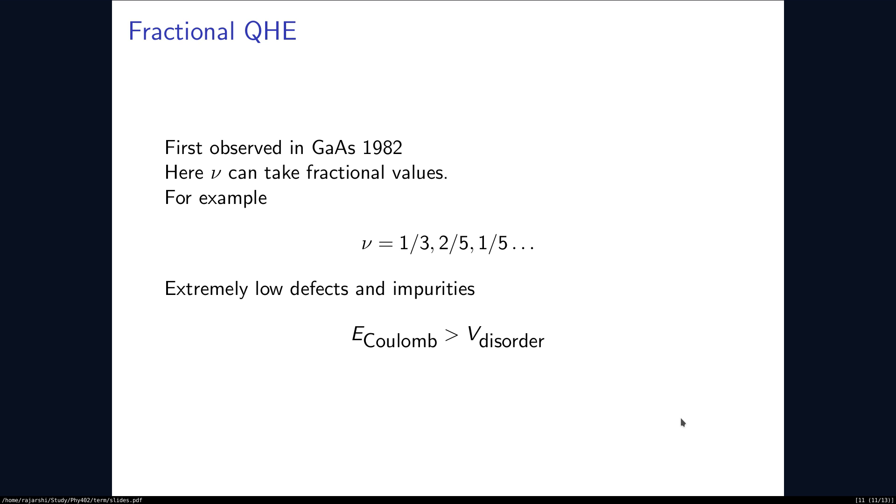In this nu can take certain fractional values, so nu equal to 1 by 3, 2 by 5, 1 by 5. These are observed. To explain this, we have to consider the Coulombic repulsion in the Hamiltonian.